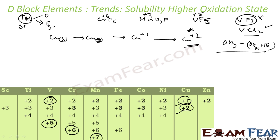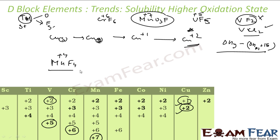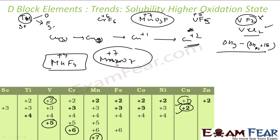Out of oxygen and fluorine, oxygen has more ability to stabilize the highest oxidation state. For example, with manganese: MnF4 gives at most a plus 4 oxidation state, but Mn2O7 gives manganese a plus 7 oxidation state. So oxygen has greater ability to form the higher oxidation state.